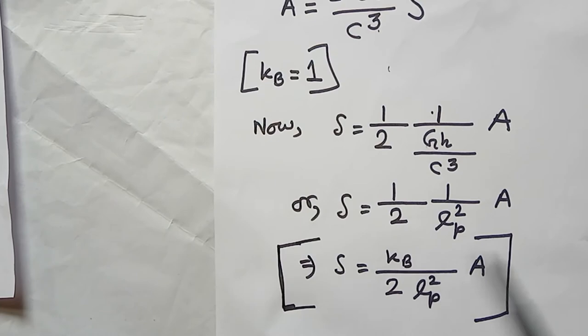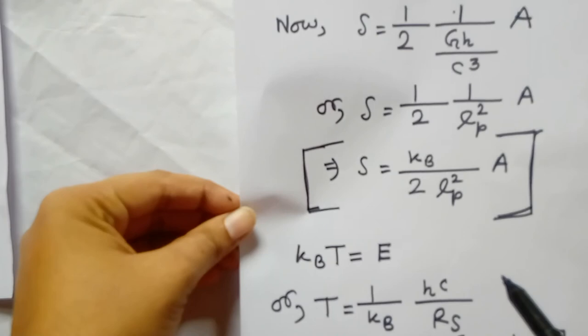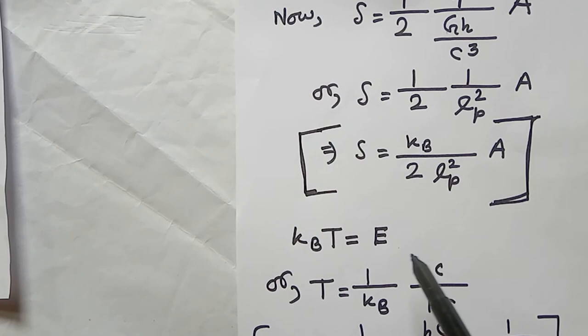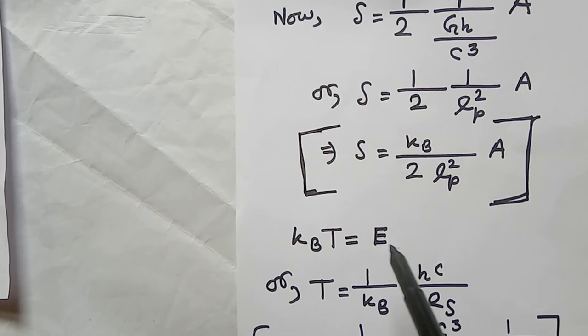Now to derive the temperature. We know that E equals kb times T, where kb is the Boltzmann constant, T is the temperature, and E is the energy. So T equals E divided by kb, which gives T equals hc divided by (rs times kb).